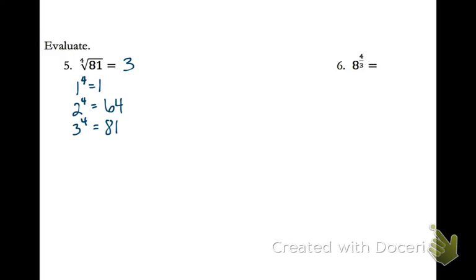For number 6, you can't really evaluate it in exponential form directly, so we're going to convert it to radical form: the third root of 8 to the 4th. Now, 8 to the fourth is a pretty big number, so let's start with the cube root of 8. What to the third power equals 8? That's just 2. Now 2 to the fourth is 64. So the answer is 64.